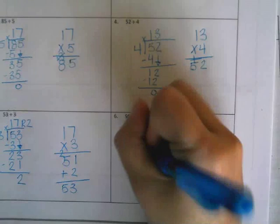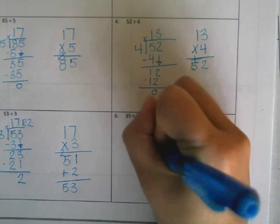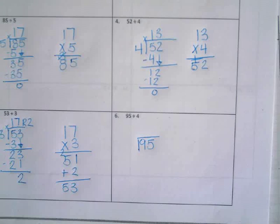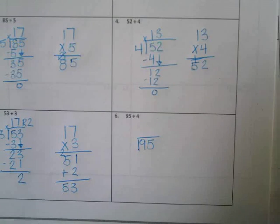Let's put what in the middle? 95. Who can tell me why we put 95 in the middle? Kaylee? It's your whole number. Our whole number always goes in the middle. Good job. And we are dividing by what? 4.